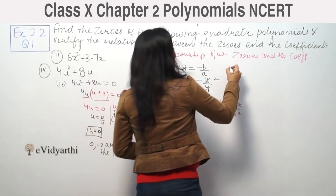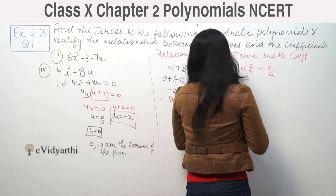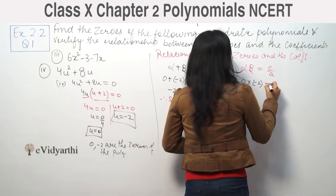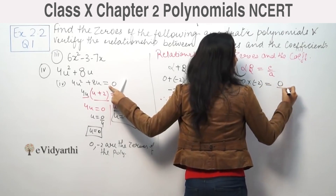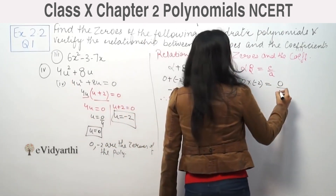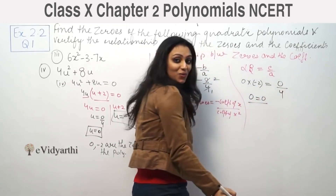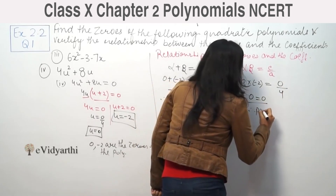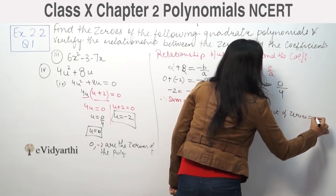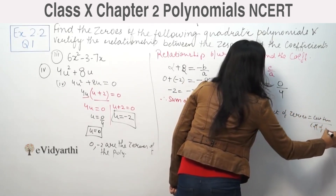For the product of zeros, alpha times beta equals c by a. Alpha is 0 and beta is minus 2, so the product is 0 times minus 2, which equals 0. The constant term c is 0, so c by a is 0 by 4, which is also 0. Therefore product of zeros equals constant term upon coefficient of x squared.